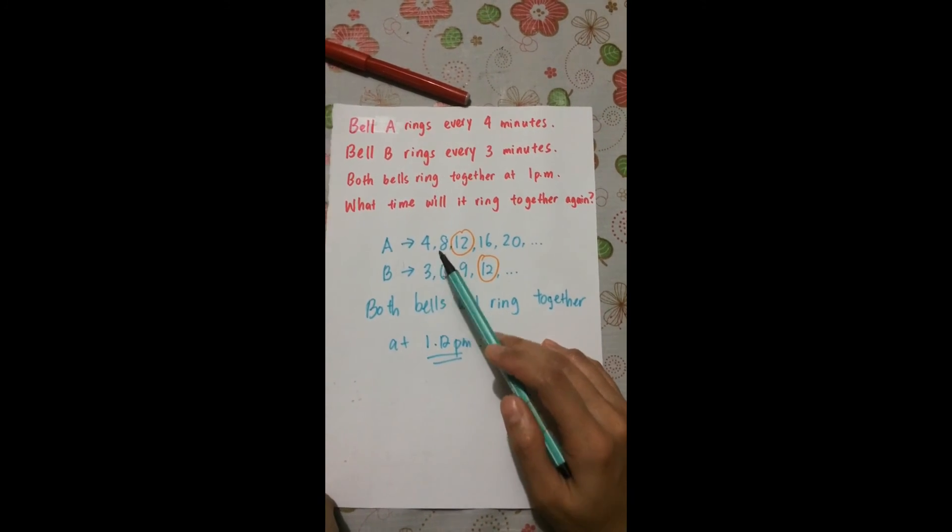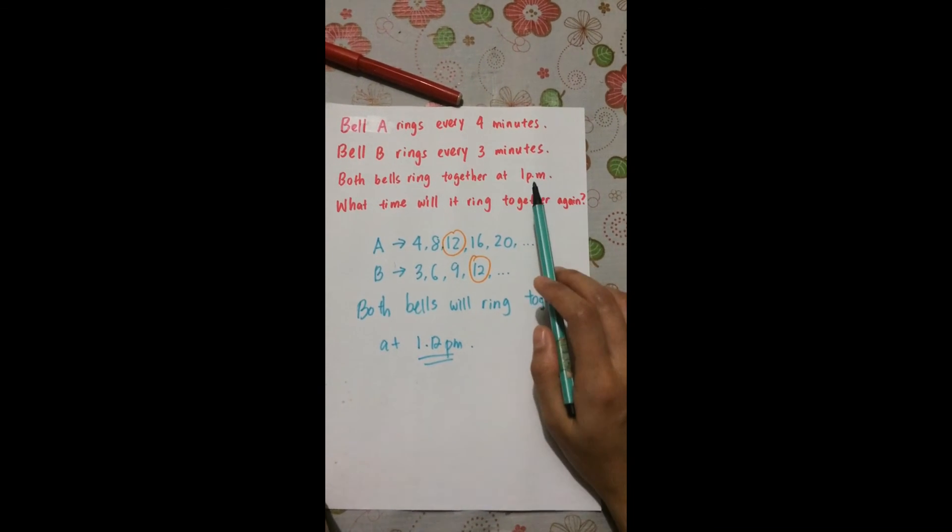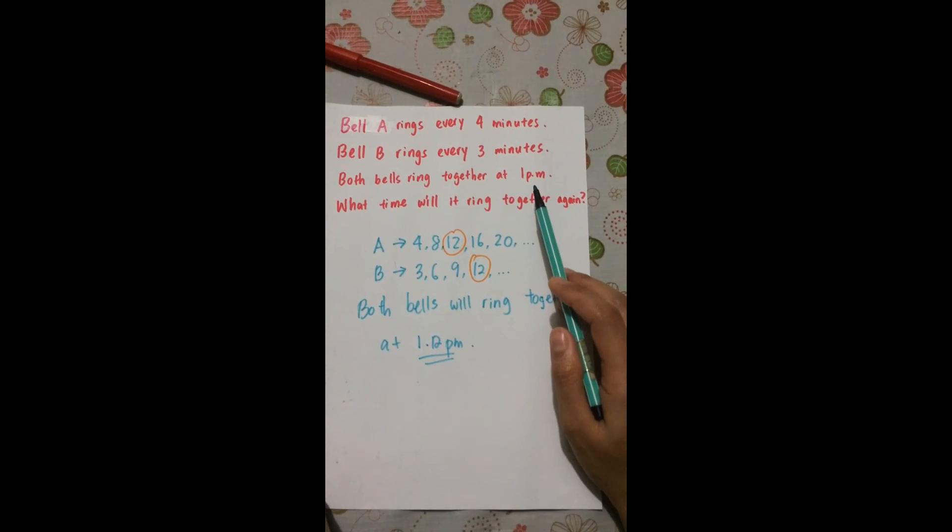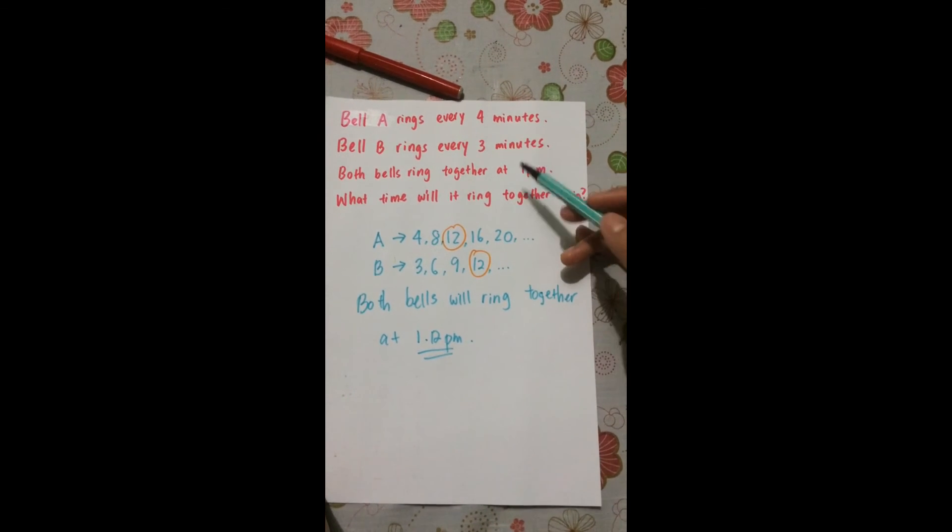So at first, they both ring at different times. But at the 12th minute, they both ring together. So what's the 12th minute after 1 o'clock? It's 1:12pm. So it's just as simple as listing the multiples.